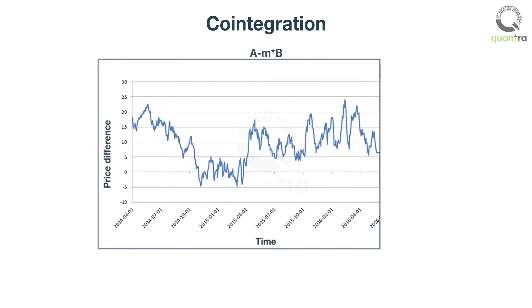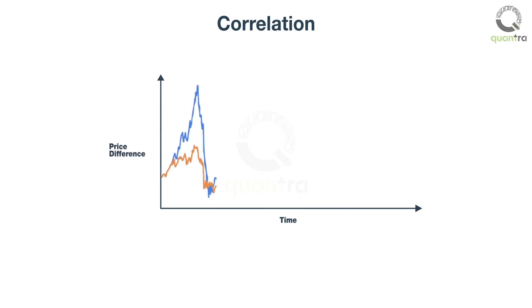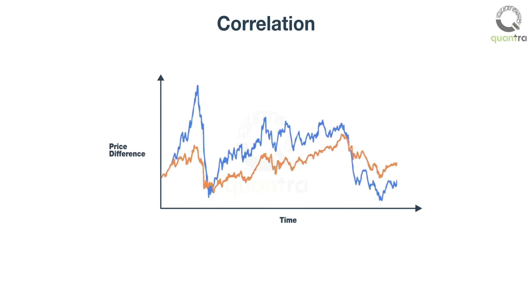In the context of trading, if the spread between two assets is stationary — that is, if the spread stays around the mean — then the prices are said to be co-integrated. On the other hand, correlated commodities are those whose prices move in the same direction but whose spread may not be stationary.